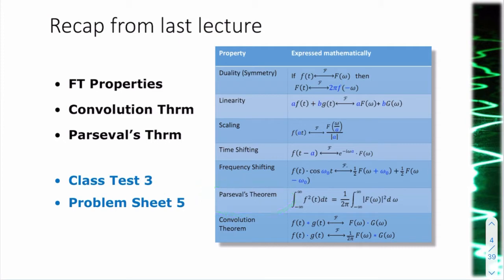Parseval's theorem allows us to find energy in the frequency domain instead of the time domain. The sifting property of the Dirac delta function, although it's not a Fourier transform property, also enables us to simplify integrations. The duality property means we don't always need to calculate the Fourier transform if we know it's part of a Fourier pair. The convolution theorem made it easier to avoid carrying out a convolution — we can simply carry out multiplications instead.